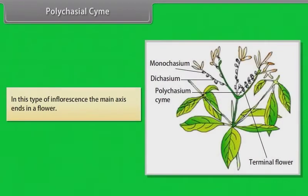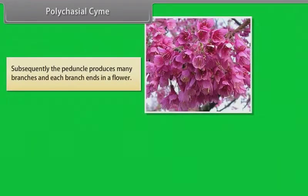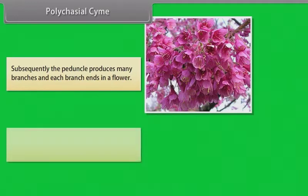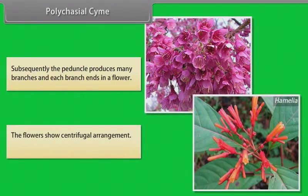In polycasial cyme, the main axis ends in a flower. Subsequently, the peduncle produces many branches and each branch ends in a flower. The flowers show centrifugal arrangement. Example: Hamelia.